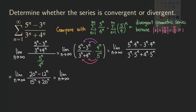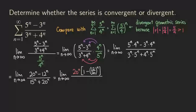If we do that, we get 20 to the n times 1 minus 12 over 20 all to the n power. Let me use brackets here so we don't have too many parentheses stacked together. Same thing in the denominator: we factor out 20 to the n, and then from the 15 to the n we get 15 over 20 all raised to the n power, and then plus 1.